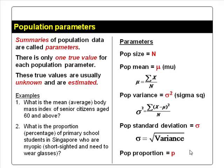We wish to know the proportion of primary school students in Singapore who are myopic. This would involve counting the total number of primary school students currently in Singapore and the number of them who are myopic. The ratio of the number of students who are myopic over the total number of students would be the proportion, or percentage, of students who are myopic. Again, this is a tedious task to do.